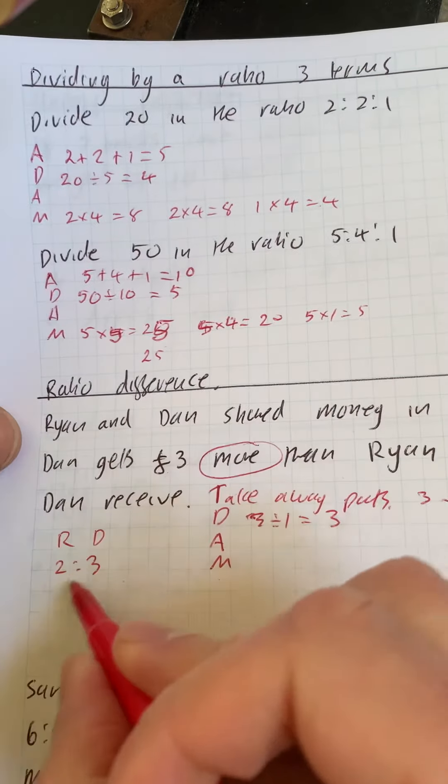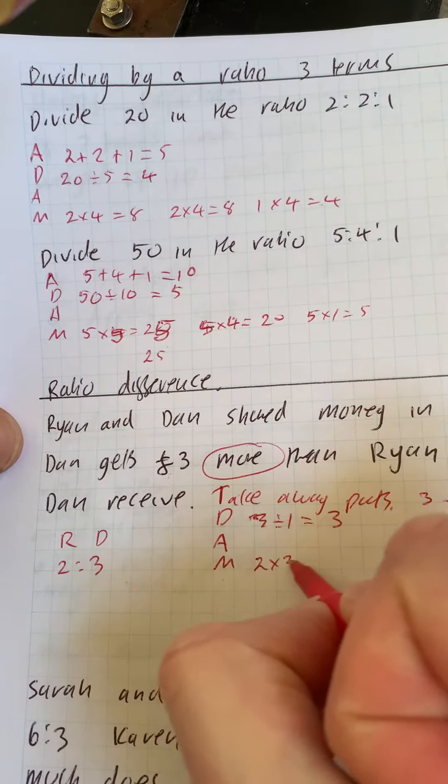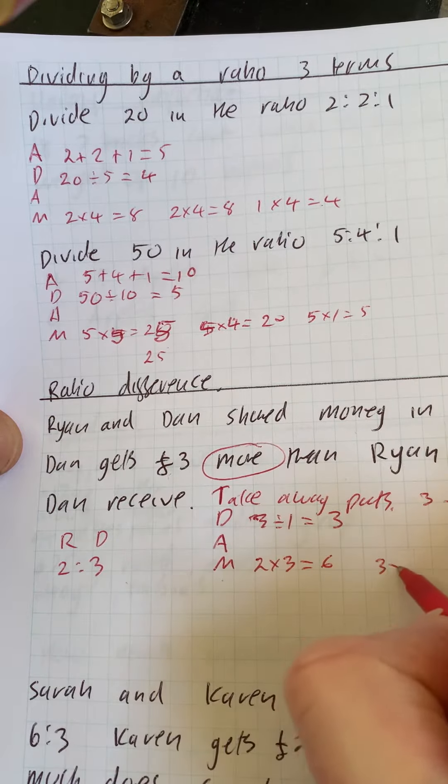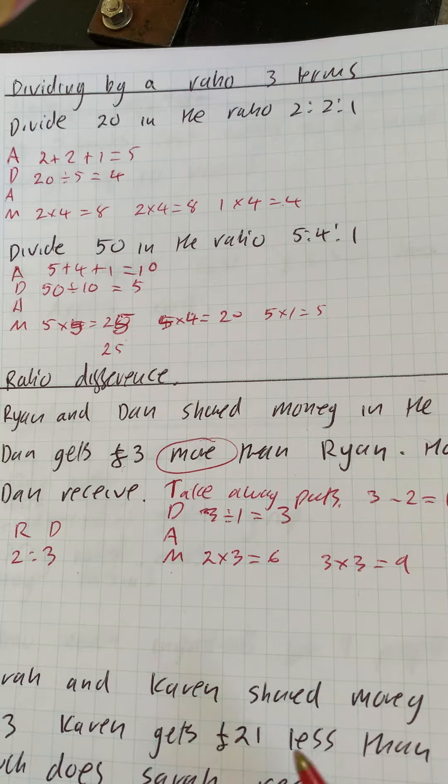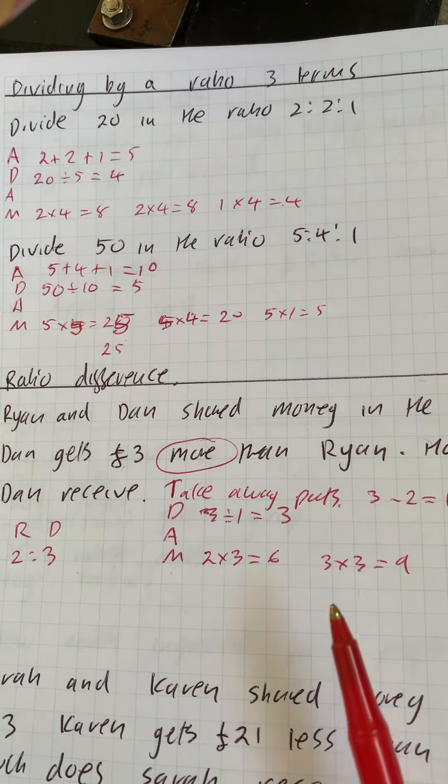And then we multiply. So we've got the ratios two times three, which is six, and three times three, which is nine. And then the question, it says Dan gets three more.